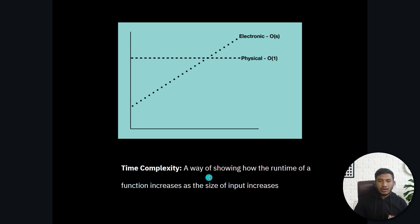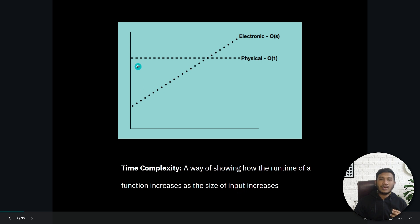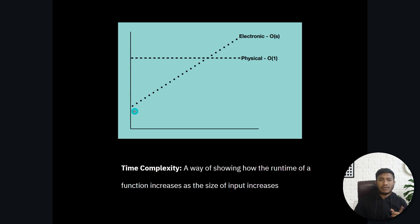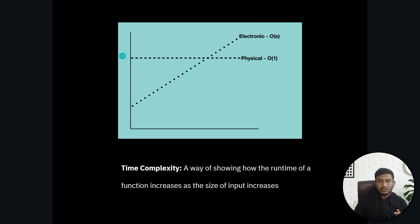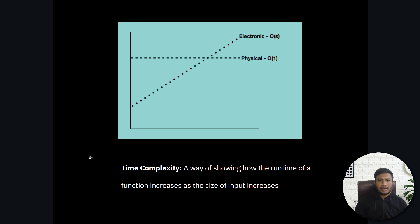In computer science, we call this time complexity. Time complexity is a way of showing how the runtime of a function increases as the size of the input increases. In method one, as file size increases, delivery time increases. In method two, even as file size increases, delivery time is constant — as you can see from the graph.